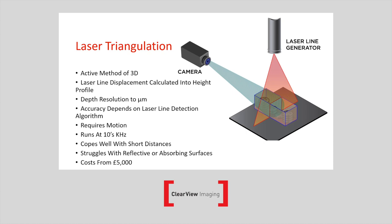Laser triangulation is another commonly used 3D technique, been around for a good few years and very popular with industrial applications. It's an active method of 3D — you have one camera and one laser projecting onto the part. The part would typically be moving along a conveyor belt underneath the laser, while the camera and laser remain in a fixed position. The distance between the camera and laser defines the resolution, among other things. You can also have two cameras and one laser for more complex situations, or one camera and two lasers.